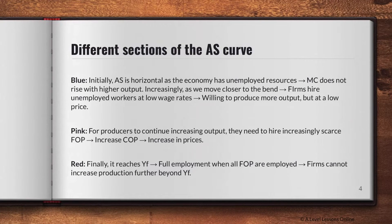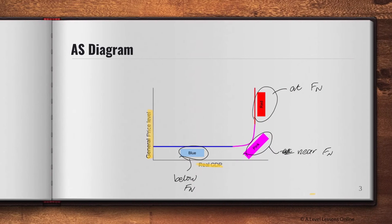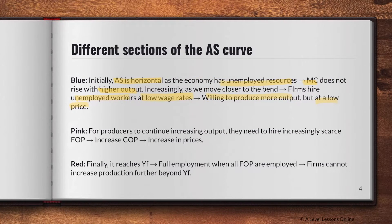Looking at the different sections of the AS curve: the blue part is initially horizontal. The reason behind this is that most resources are actually unemployed, so your marginal cost — the additional cost of producing another good — does not rise with a higher level of output. As we move closer towards the band, firms will hire unemployed workers at a low wage rate and are willing to produce more output, but still at a low price. Essentially, the entire blue section shows no change in price even as output increases, because there are still unemployed resources.